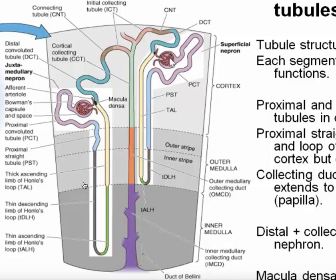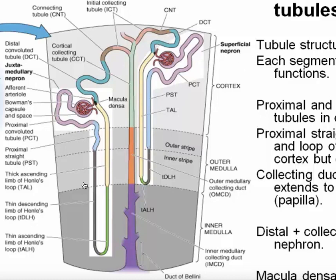Let's start with the cortical glomeruli — 90% of the glomeruli are in the outer two-thirds of the cortex. This glomerulus is surrounded by the Bowman's capsule, which gives rise to the proximal convoluted tubule — this is the first part of the tubule, and it is entirely in the cortex. At the end of the proximal convoluted tubule, the direction changes and it plunges down deep into the cortex and eventually enters the outermost part of the outer medulla. This is the proximal straight tubule, also sometimes called the pars recta.